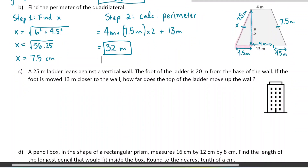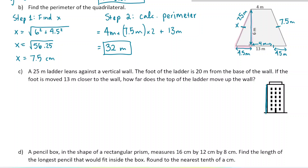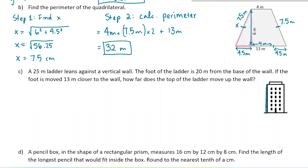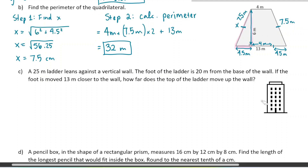Next: a 25 meter ladder leans against a vertical wall — vertical means straight up and down. The foot of the ladder, meaning the bottom, is 20 meters from the base of the wall. If the foot is moved 13 meters closer, how far does the top of the ladder move up the wall? We have two scenarios. I'll draw the first one in blue. We're 20 meters from the base of the wall and the ladder is 25 meters long.